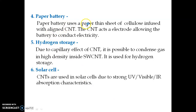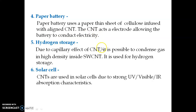CNTs can be used in a paper battery using a very thin sheet of cellulose. In a battery we have an electrolyte and an electrode — this thin cellulose sheet acts as the electrolyte, and it is infused with carbon nanotubes, which act as the electrode, allowing the battery to conduct electricity. Since CNT has a tube-like capillary structure, it can also be used to store hydrogen.